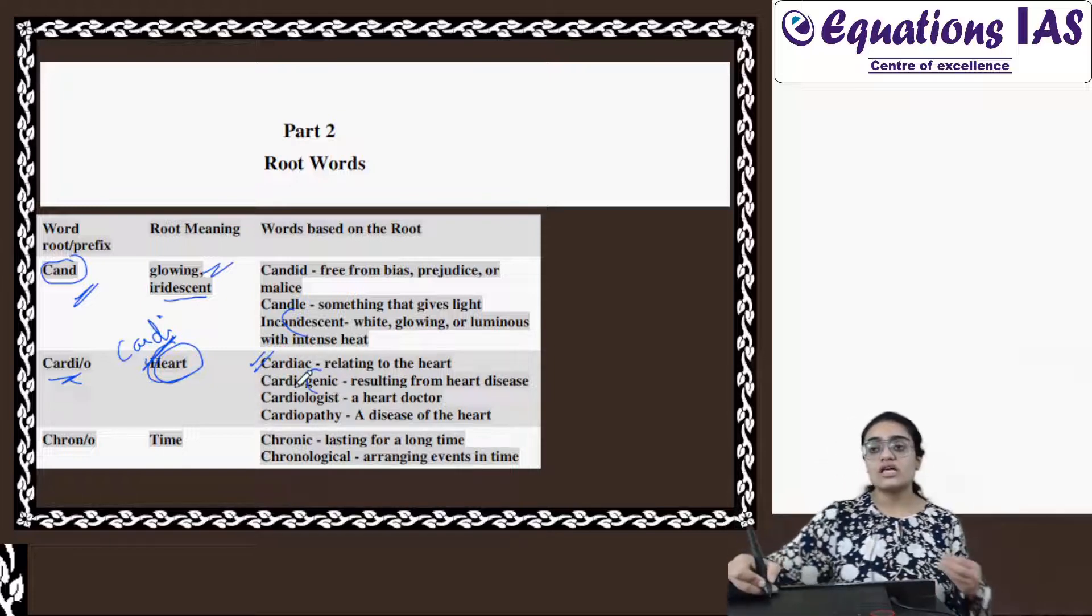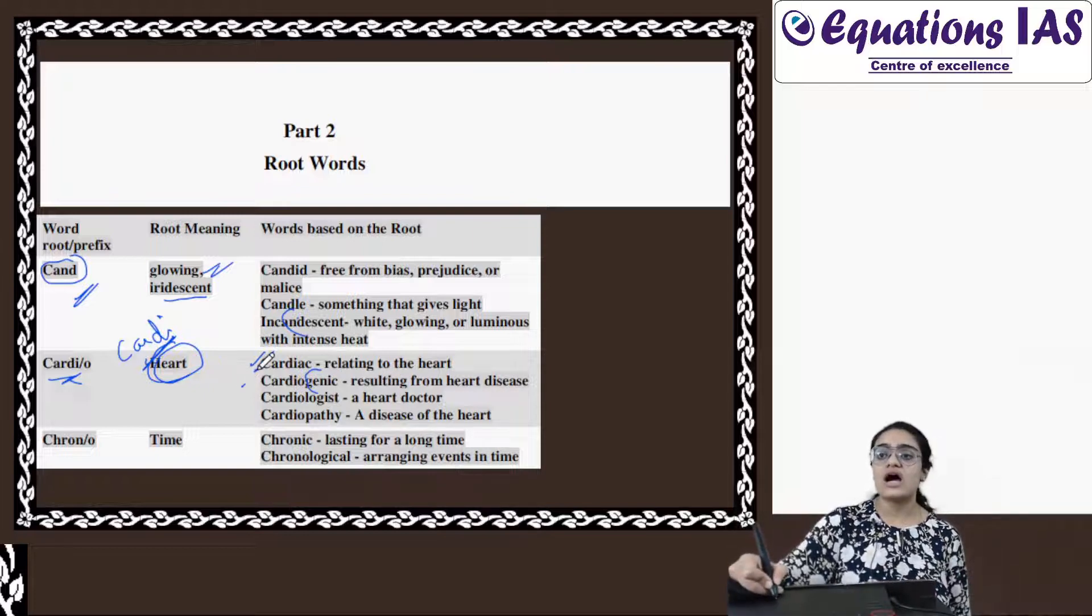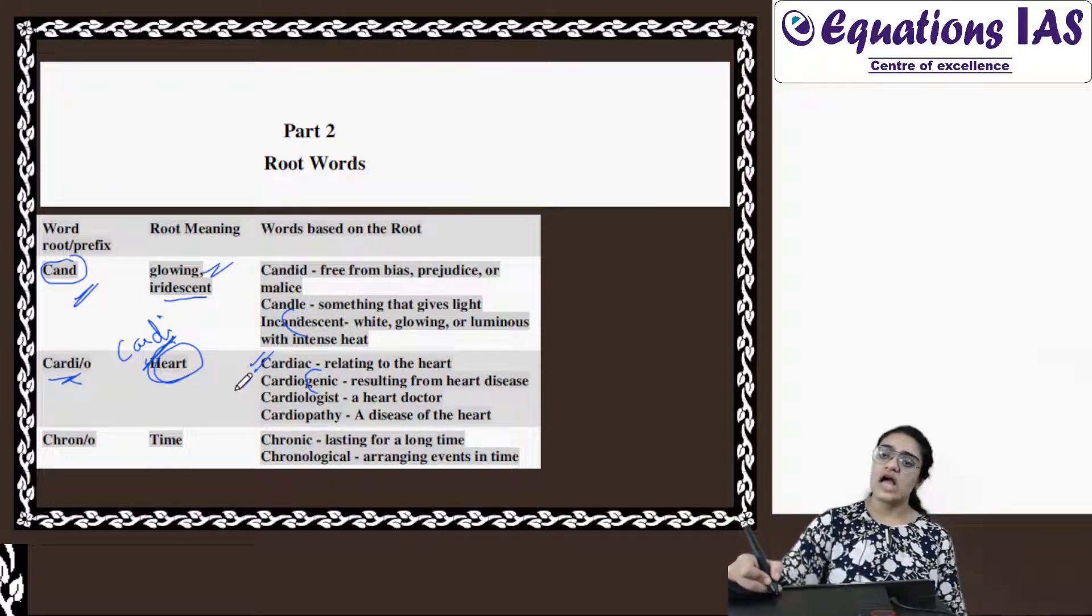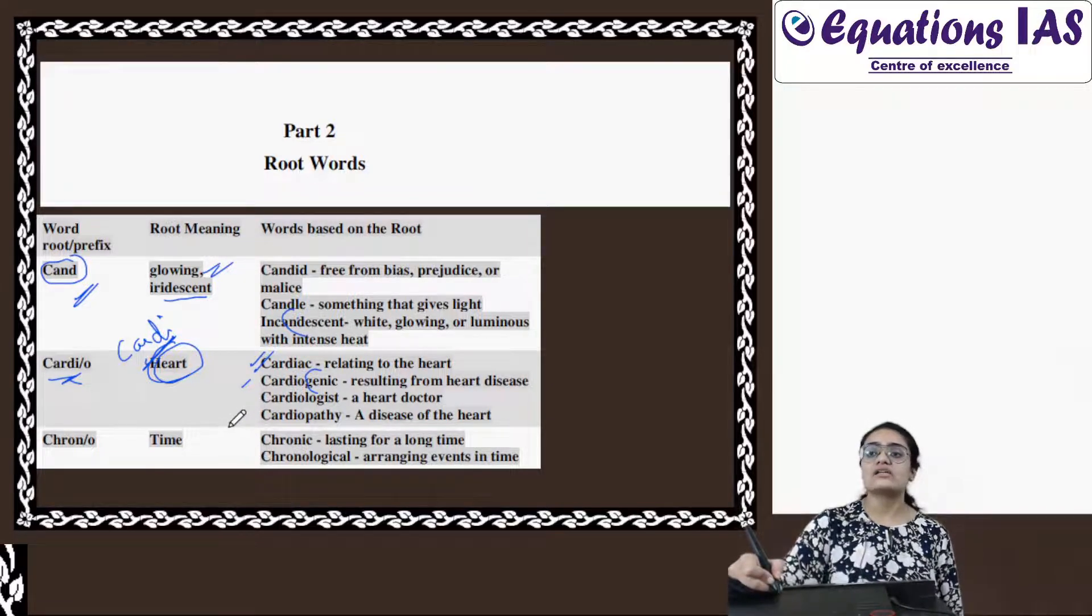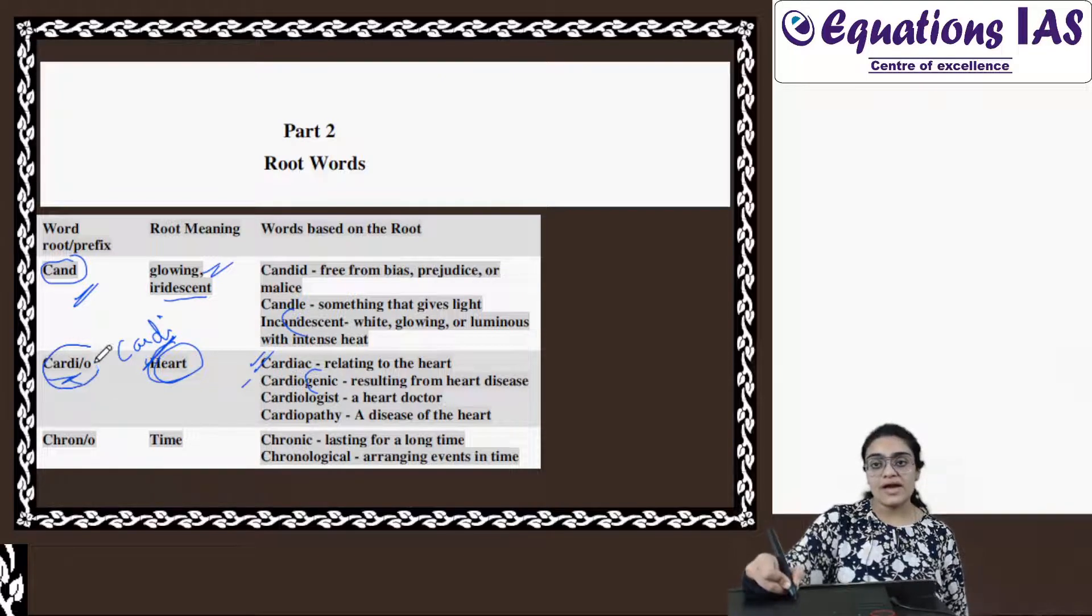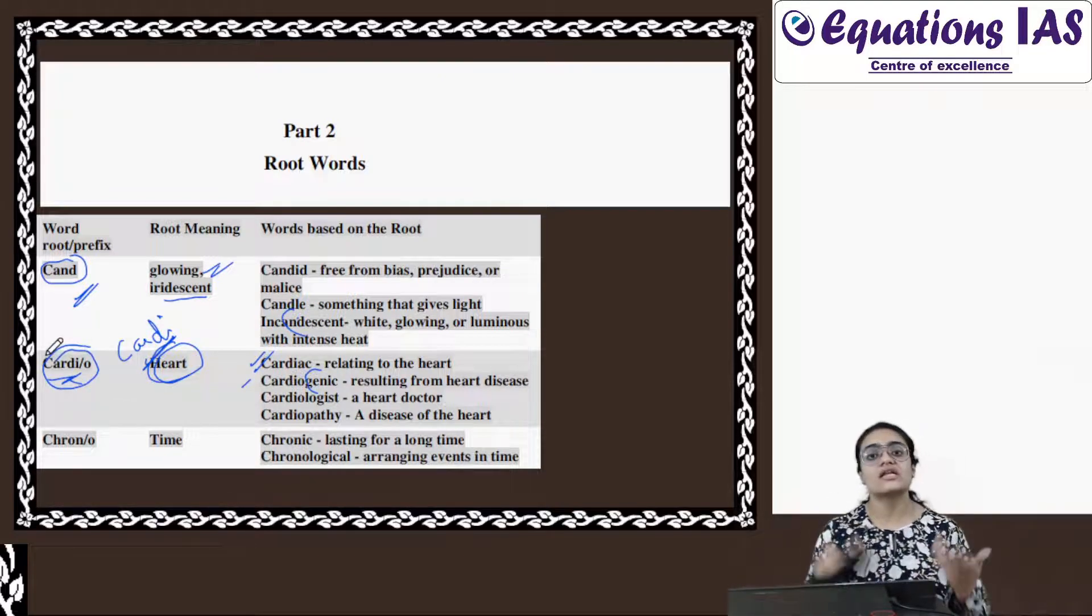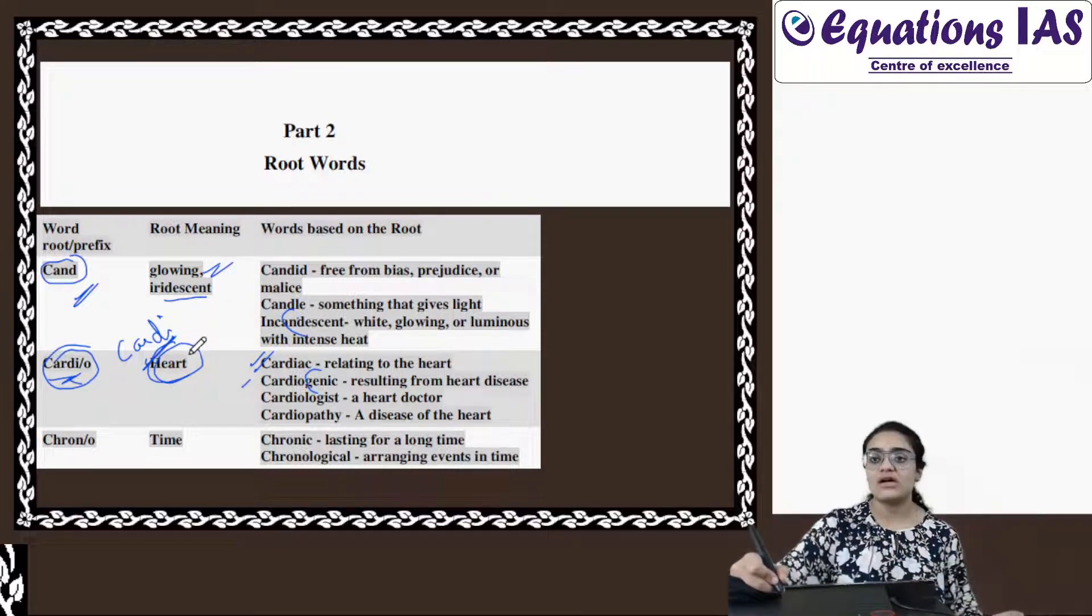So therefore, we are relating to some disease - disease related to heart. Cardiologist - heart ka doctor, dil ka doctor. Cardiopathy - again, a disease of heart. So whenever you see Cardi or Cardio, this kind of word, somewhere they are related to dil - dil ka ilaj, dil ki bimari, dil ka doctor. Biological organ, not emotional wala, right?